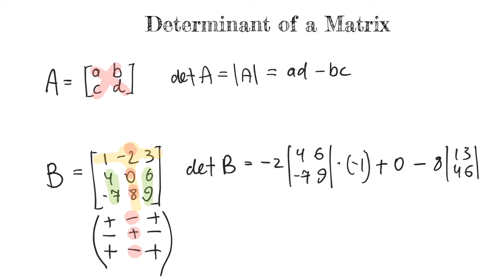And what this gives us is now it's a much, much simpler calculation. We will calculate right now negative 2, actually just 2, since we're multiplying by negative 1, multiplied by 36. So, this minus this minus minus negative 42 or just plus 42 plus 0 and minus 8 multiplied by 6 minus 12.